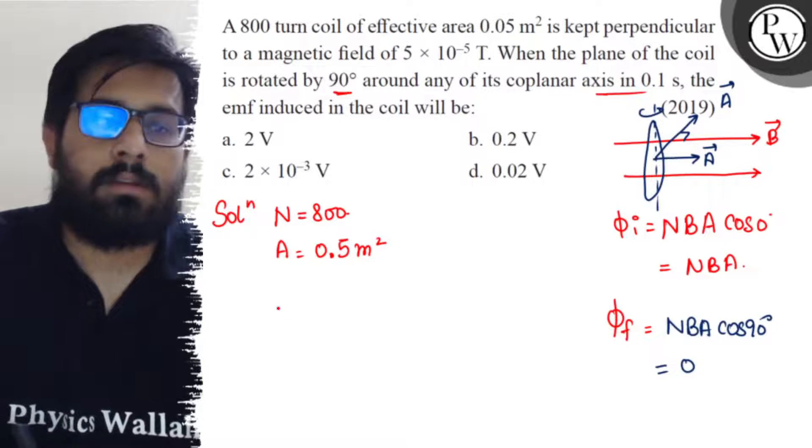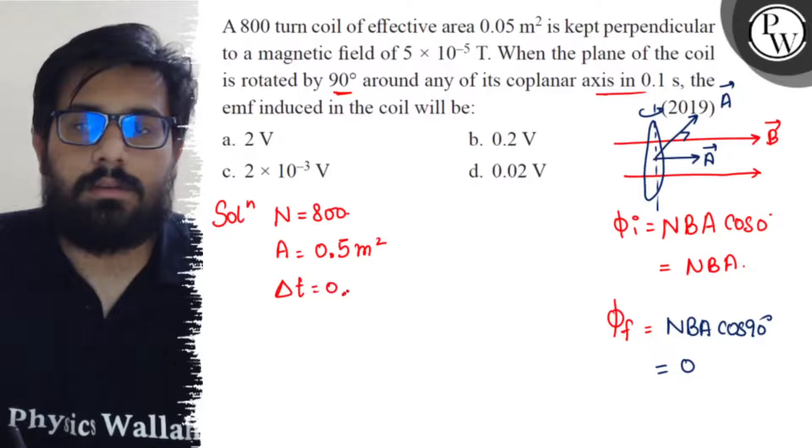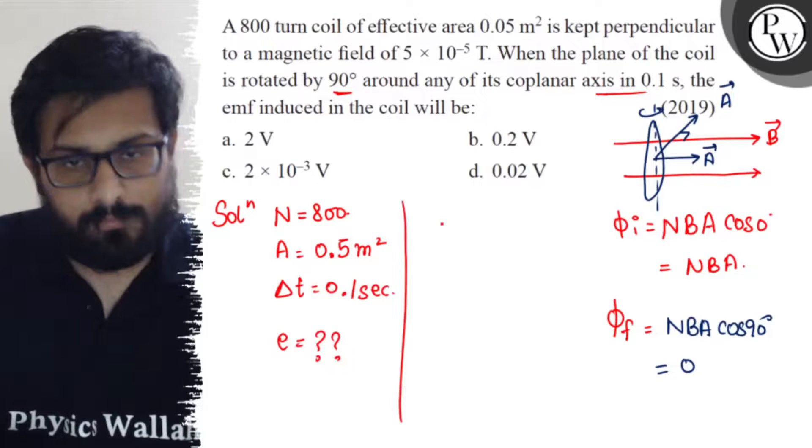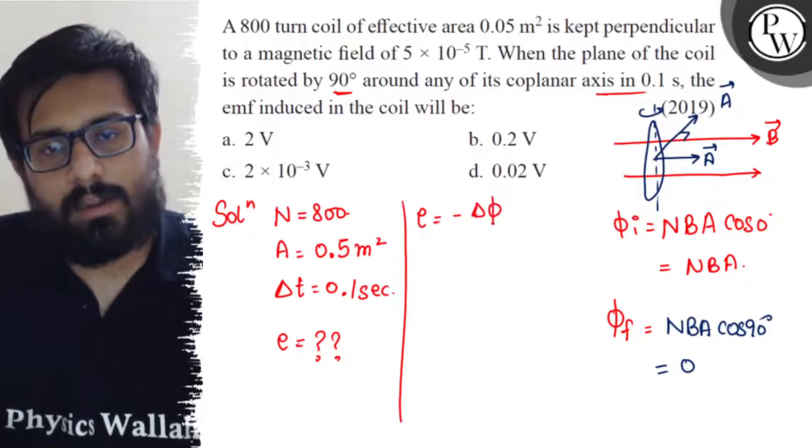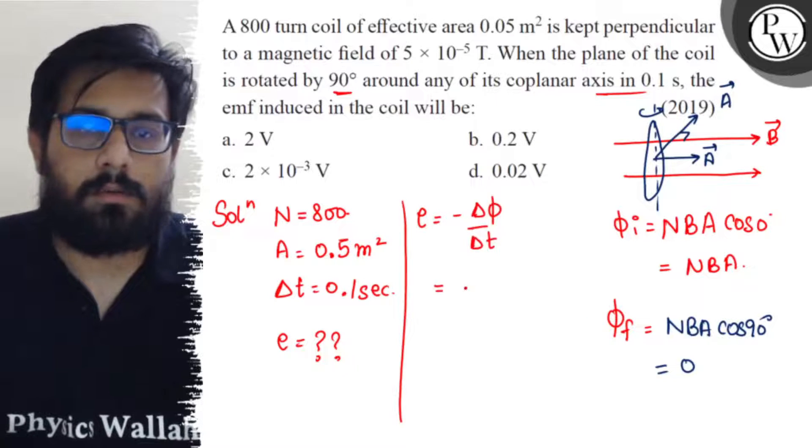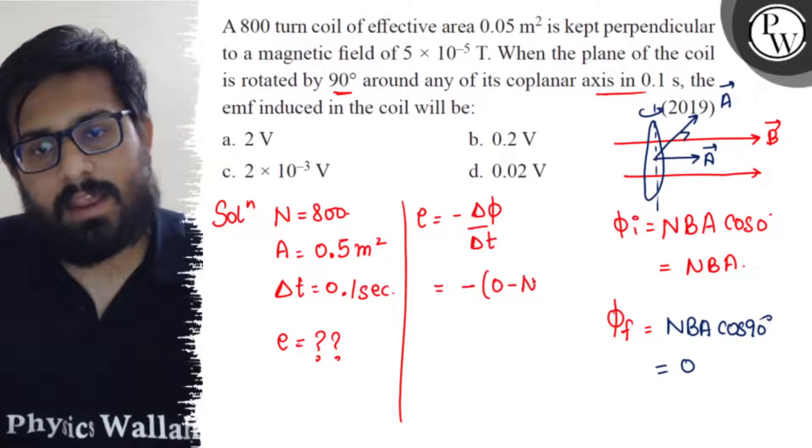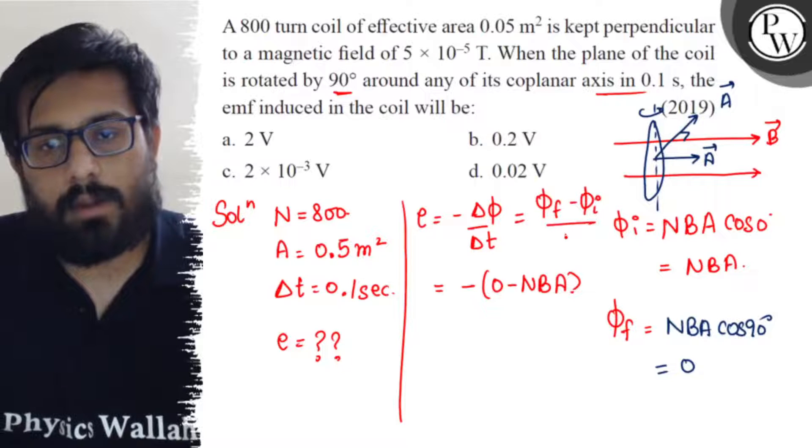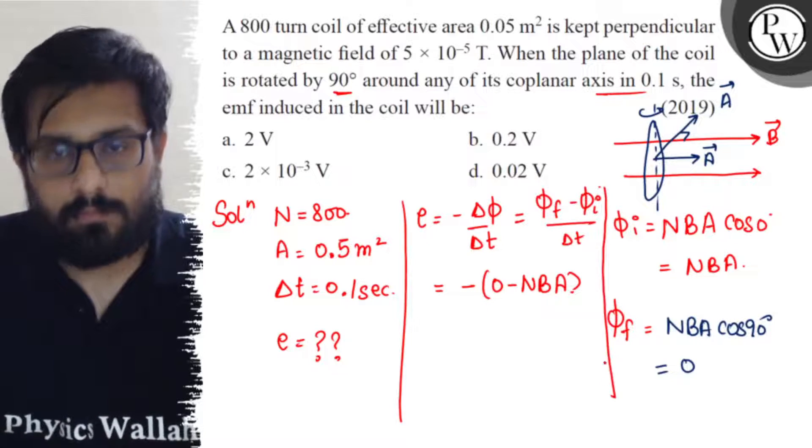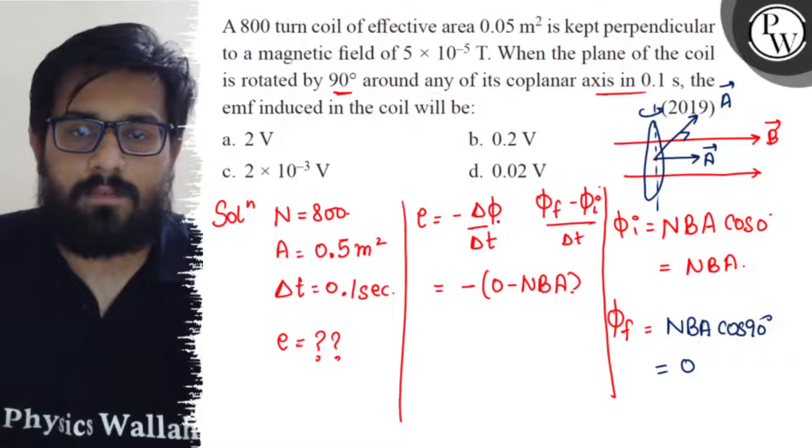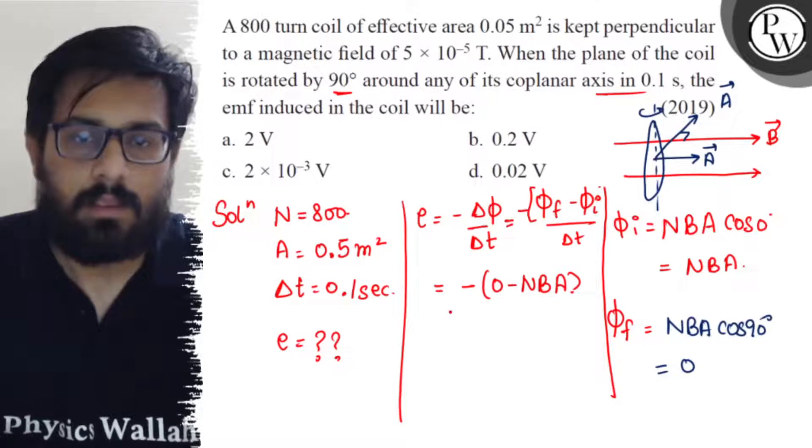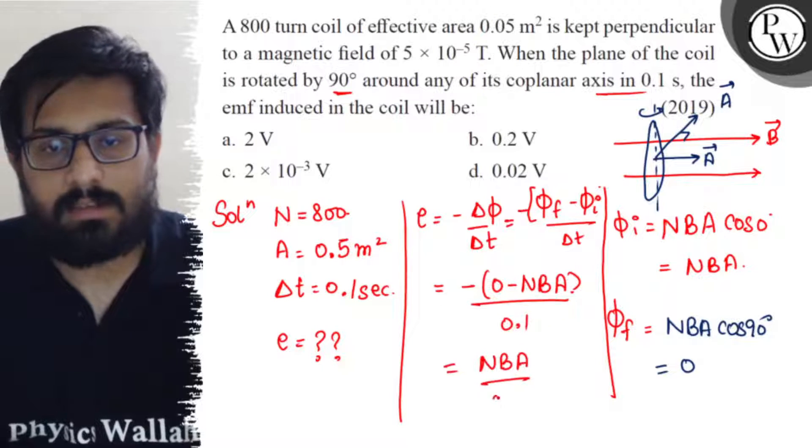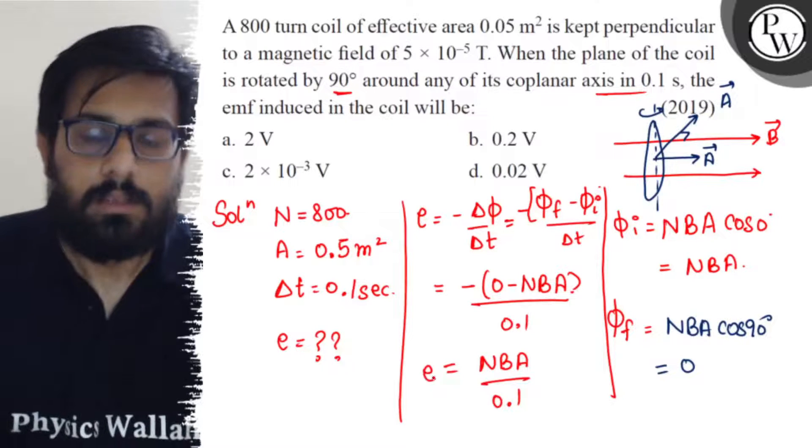Now what are the other data we have? The time interval is 0.1 second and we have to calculate the value of induced emf. So we know that e equals minus Δφ/Δt. So minus of (0 - NBA), which is Δφ (final minus initial), upon delta t, upon time interval of 0.1. That comes out to be NBA divided by 0.1.